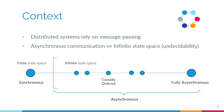Most of the time, an infinite state space means we will deal with Turing-equivalent models. With these Turing-equivalent models, properties that were decidable in the synchronous world become undecidable. It is for this reason that, in the literature, a lot of approximation techniques have been proposed to try and recover decidability in this asynchronous context.